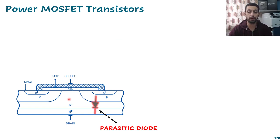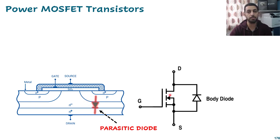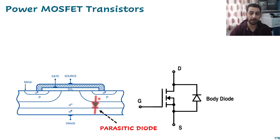One of the main parasitic components is a diode. Looking at the P and N- and N+ junctions, this is the same structure as a power diode. So inside the MOSFET there is a parasitic body diode — it is a reverse diode, drawn from source to drain. It is not intentionally made but is parasitic.